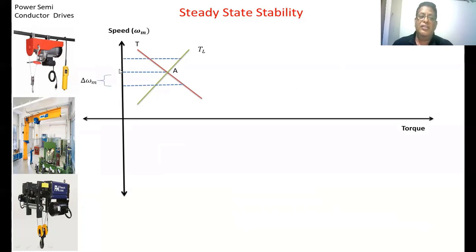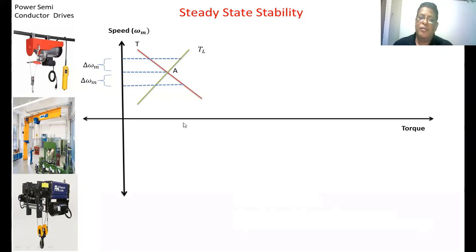Now in the second case, this is an increasing speed scenario. This is the actual operating point. Because of some disturbance, if the load and the motor torque decrease, the speed will be increased. The disturbance may be on the load side or motor side. At this case, the motor torque will be lesser and load torque will be more corresponding to the upper dotted line. So load torque is more and motor torque is lesser, so the speed of the motor decreases again back to the original position. This system is at steady state stability.